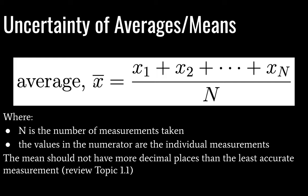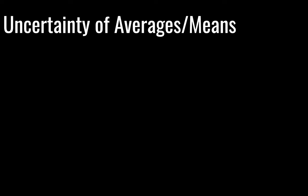Calculating an average: you take each data point from different trials, and if you have n data points, divide by that integer n. n is the number of measurements taken, and the values in the numerator are individual measurements. The mean should not have more decimal places than the least accurate measurement — so we're talking about significant figures here. Go ahead and review Topic 1.1 if you need a refresher.